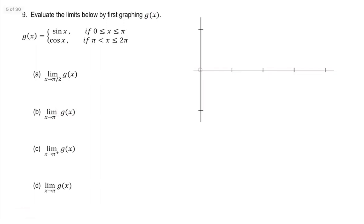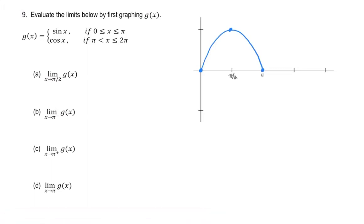At 0, sine is at 0. At π/2, we're up at 1. At π, we're back down at 0. The graph looks like that, and this whole time we're using the standard increments you would graph with for trig functions.